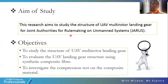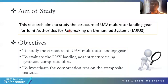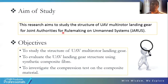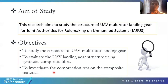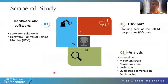This research aims to study the structure of the UAV multi-rotor landing gear for Joint Authorities for Rulemaking on Unmanned Systems (JARUS) implementation. The objectives are: to study the UAV multi-rotor landing gear structure, to evaluate the UAV landing structure using synthetic composite fiber, and to investigate the compression test on composite material. The scope focuses on the landing gear of the UTHM cargo drone, with analysis of maximum stress, maximum strength, deflection, compression, and safety factor. Hardware and software used include SolidWorks and the Universal Testing Machine (UTM).